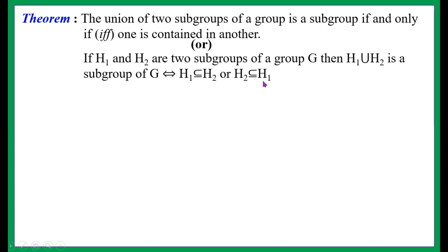Thus H1 ∪ H2 is a subgroup of G if and only if H1 ⊆ H2 or H2 ⊆ H1. In the first part we assumed H1 ∪ H2 is a subgroup and proved containment; in the second part we assumed containment and proved H1 ∪ H2 is a subgroup. The condition that H1 and H2 are subgroups of G is common to both parts.